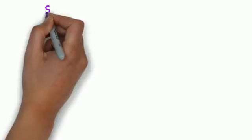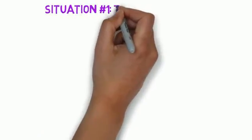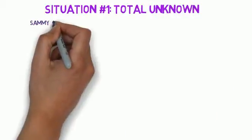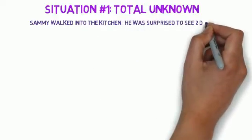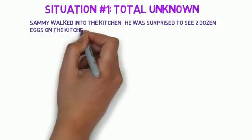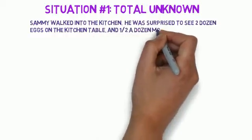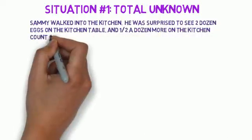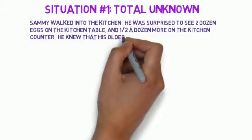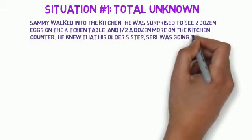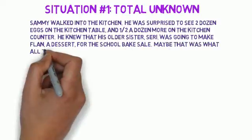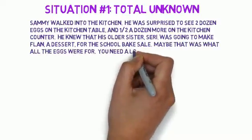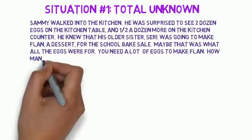The first situation we're going to look at is a total unknown situation. Sammy walked into the kitchen. He was surprised to see two dozen eggs on the kitchen table and half a dozen more on the kitchen counter. He knew that his older sister, Siri, was going to make flan, which is a dessert, for the school bake sale. You need a lot of eggs to make flan. How many eggs did Sammy see in the kitchen?